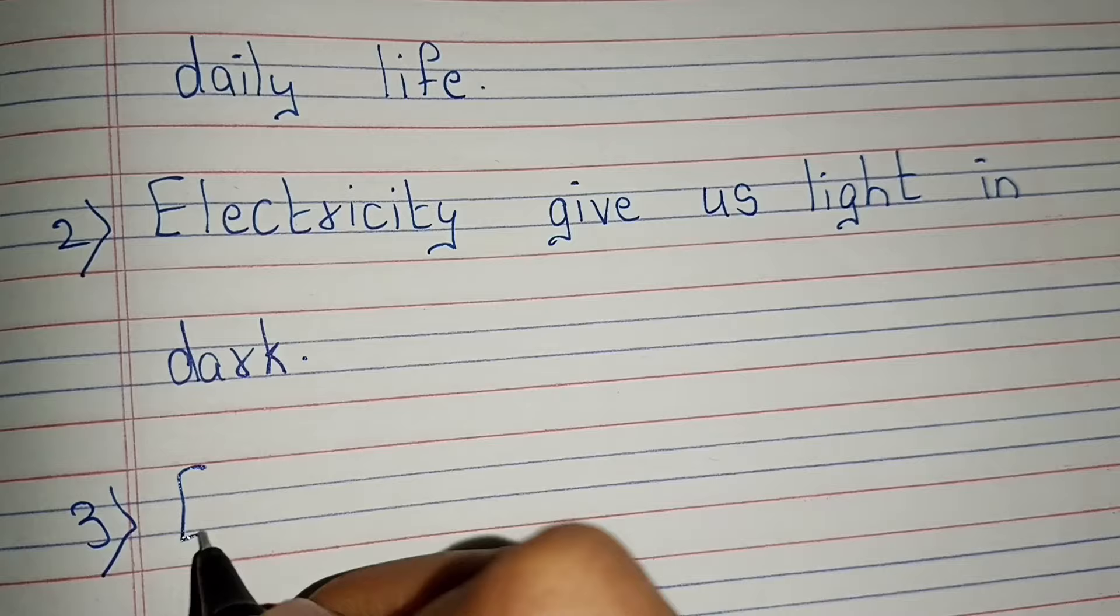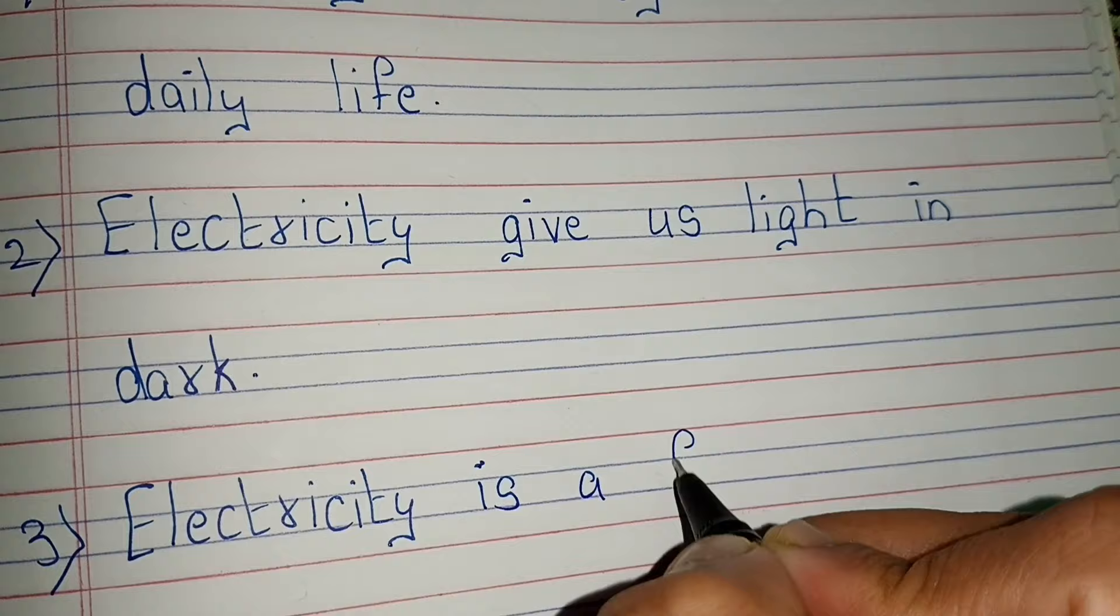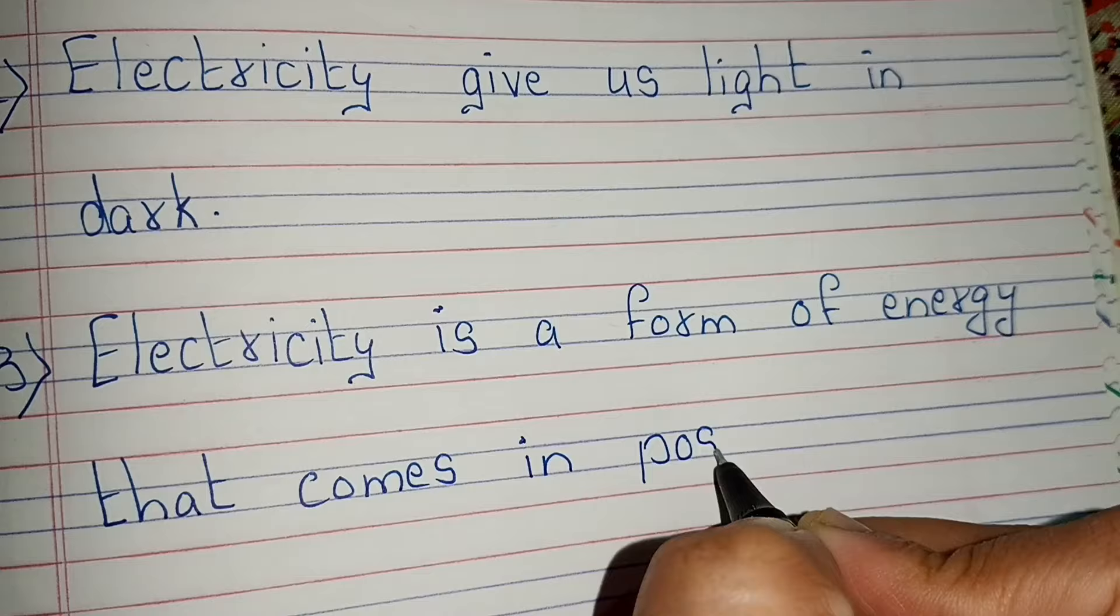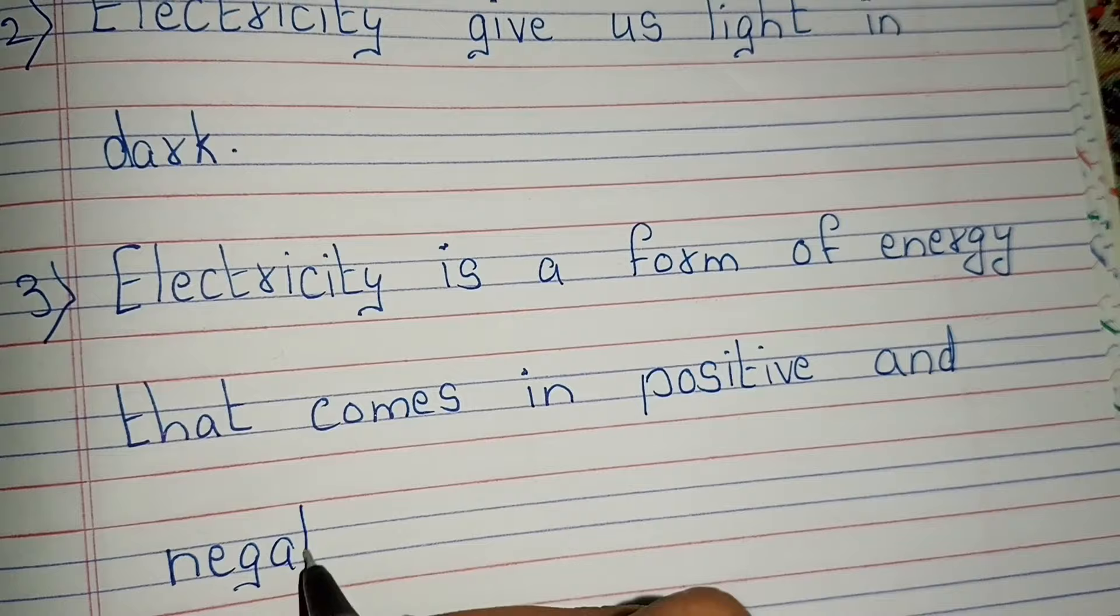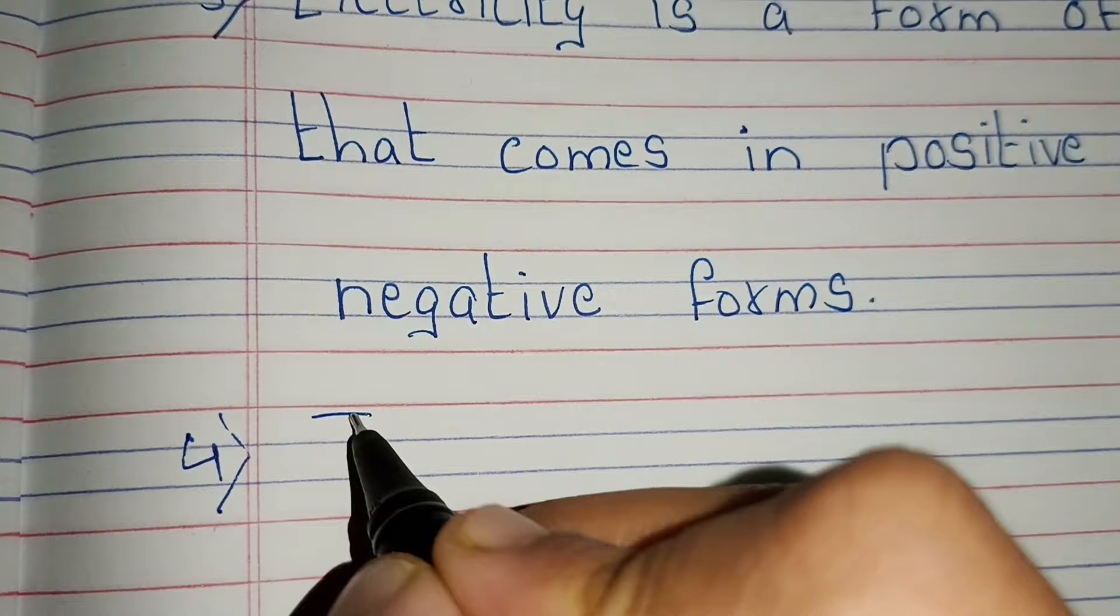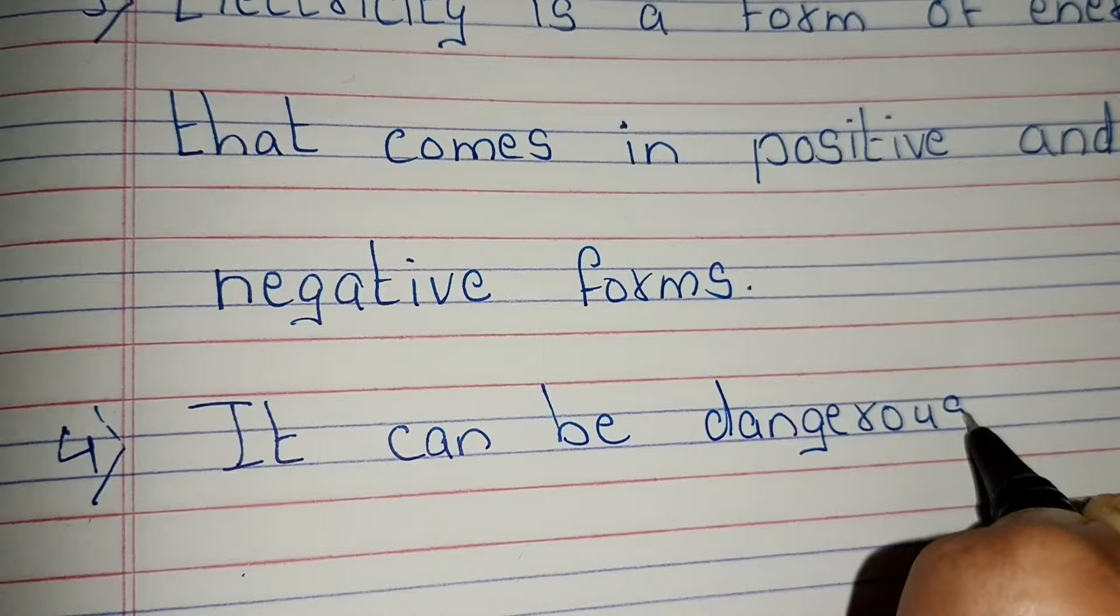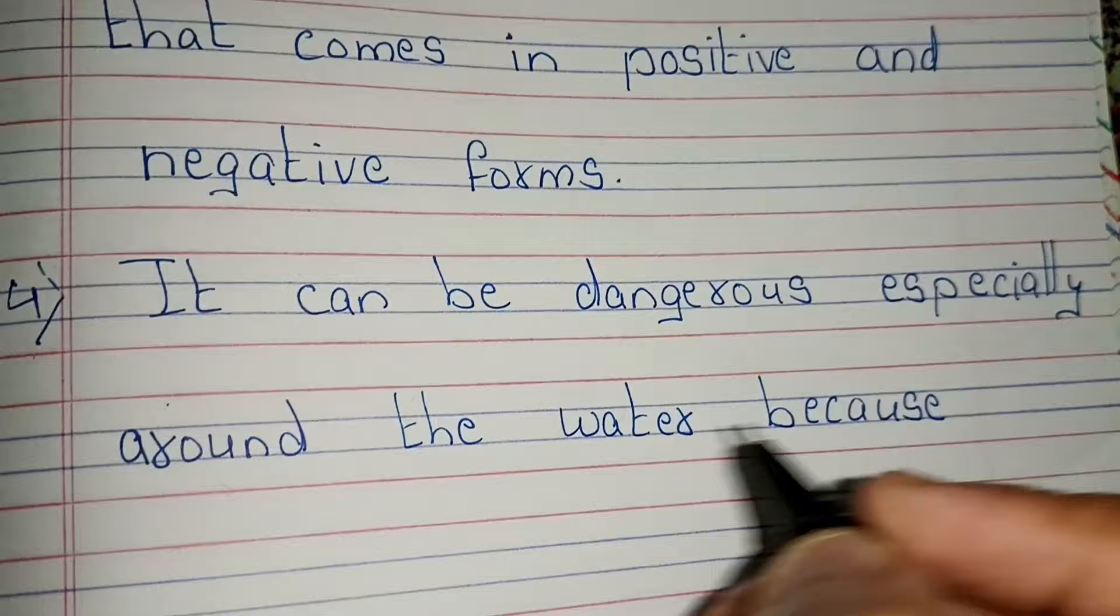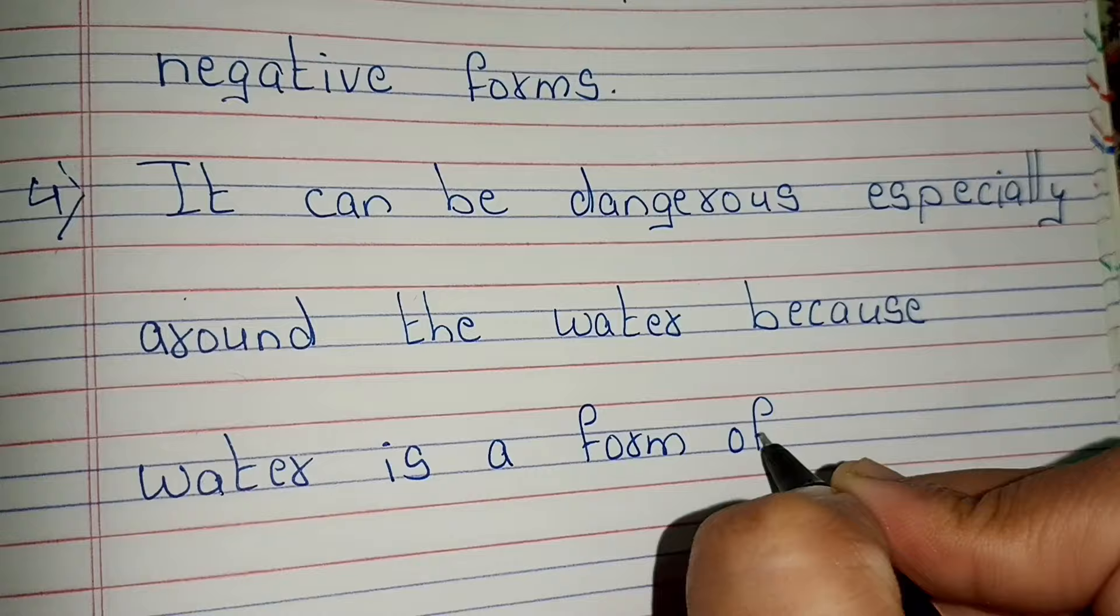Electricity is a form of energy that comes in positive and negative forms. It can be dangerous, especially around the water, because water is a form of conductor.